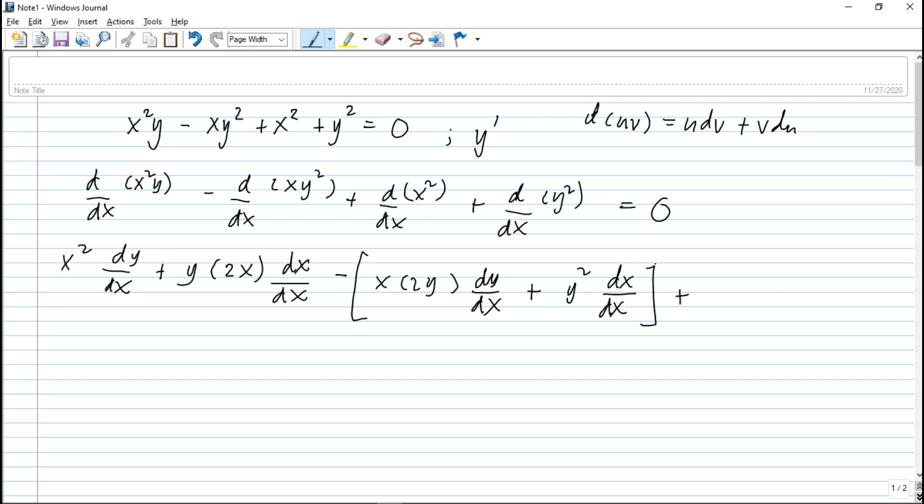plus, differentiate nito, that is 2x, differential of x with respect to x. Plus, derivative nito, that is 2y, differential of y with respect to x. That is equal to 0.